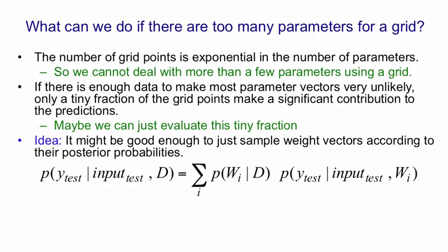Now instead of adding up all the terms in that sum, we could just sample terms from that sum. What we do is we sample the weight vectors in proportion to that probability. So either we sample them or we don't. So they'll get a weight of 1 or 0. But the probability of getting a 1, that is the probability of being sampled, will be their posterior probability.